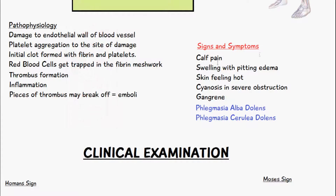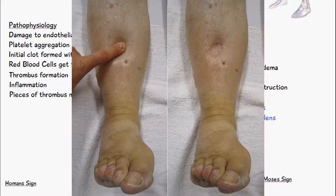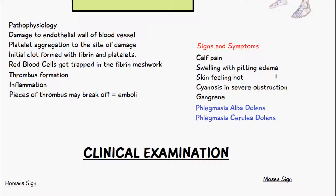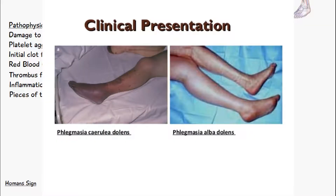The signs and symptoms of deep vein thrombosis include calf pain, since it most commonly occurs in the legs. We can have swelling with pitting edema. The skin around the legs can feel very hot. In cases of severe obstruction, we can have cyanosis, where the color of the skin changes to a purply or bluey appearance, and gangrene can also form.